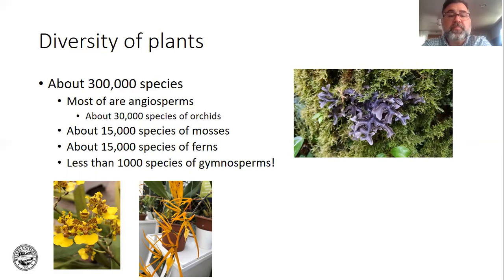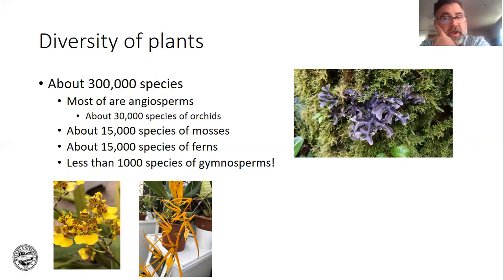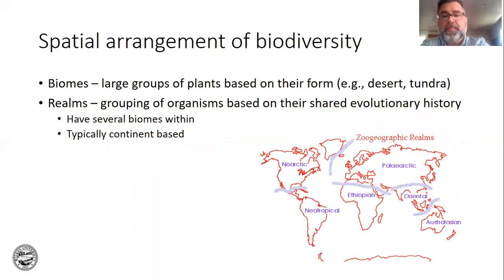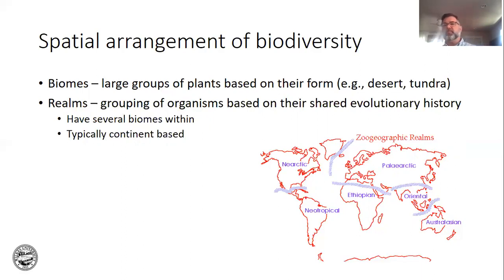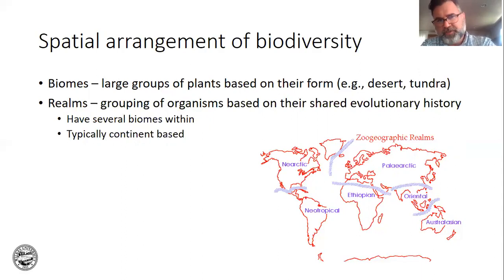There are 15,000 species of mosses, 15,000 species of ferns, and less than 1,000 species of gymnosperms — your pines and spruces, and things like cycads. If you go back to the Cretaceous, they were much more common, but they're declining in species richness. There are a number of rare cycads that are disappearing as well.